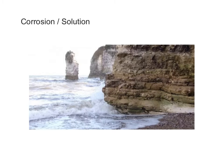Number three is corrosion or solution. This is the dissolving of the cliff face itself. The cliff has to be soluble — for example, calcium in chalk or limestone can be dissolved by the sea, which may contain a very weak carbonic acid.